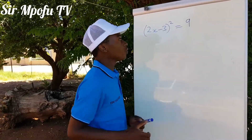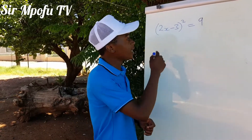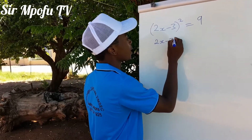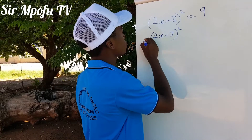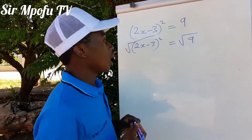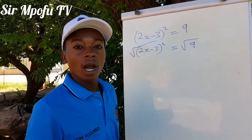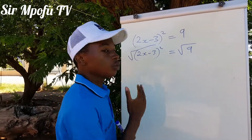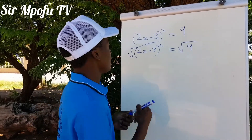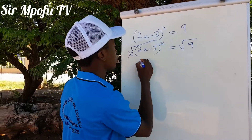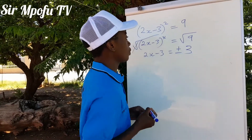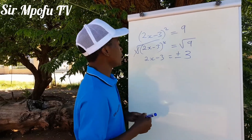The first thing, you must remove the squared sign. How do you do that? By introducing the square root sign. So it's going to be the square root of (2x minus 3) squared, equals to the square root of 9. Remember, what you do to the left, you must also do it to the right, because an equation is a statement of equality. This cancels out to give 2x minus 3 equals plus or minus 3, which is the square root of 9.